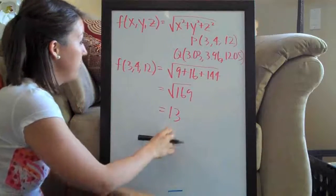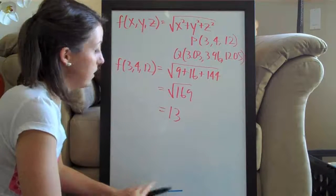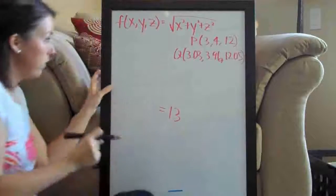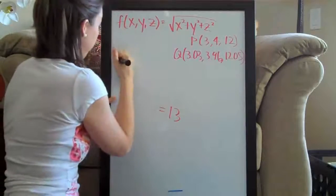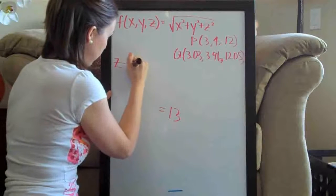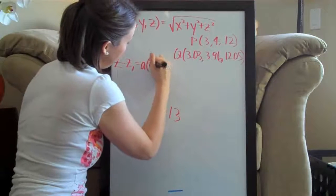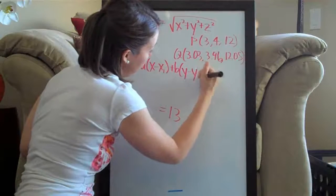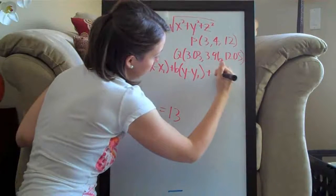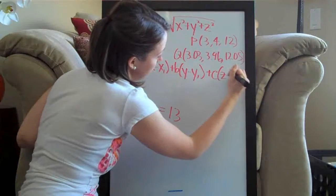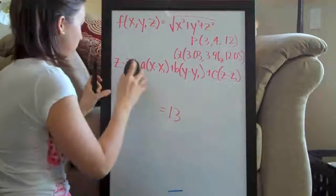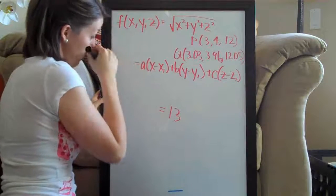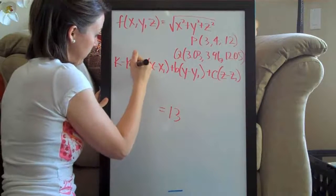So that's the first thing we always do — plug in the point to the original function. Let's go ahead and write the linear approximation equation right here. The equation is: k minus k1 equals a times (x minus x1) plus b times (y minus y1). And because this is a function in three variables, we will need a third term: c times (z minus z1). Since we actually have x, y, and z, I need to change the output variable — normally you'd use z, but we'll call it k minus k1 just to be different.